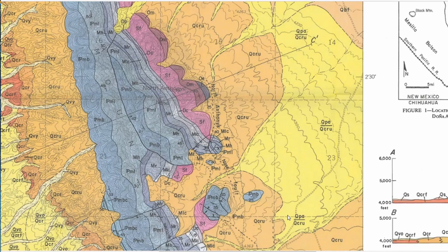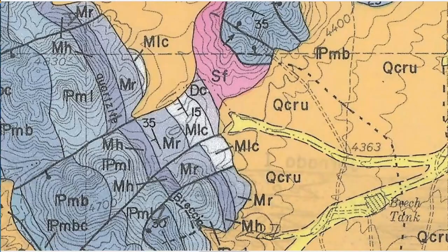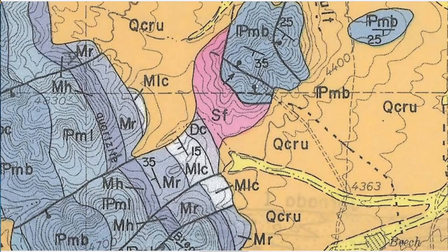The lines between rocks are solid, meaning a sharp contact between the two units. Dashed lines mean the contact is inferred or not well exposed. For example, this fault line is dashed because it goes under the Quaternary alluvium and can't be seen. This inferred normal fault is represented by a dashed line, while solid lines indicate obvious, visible contacts.